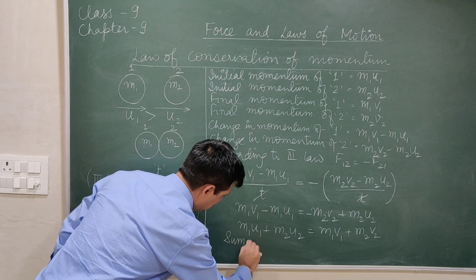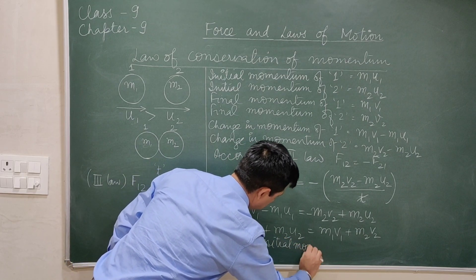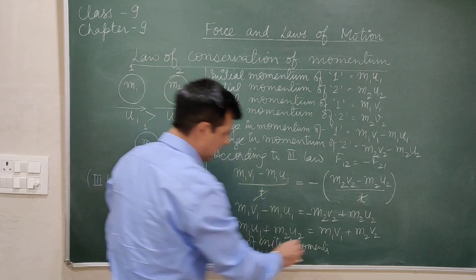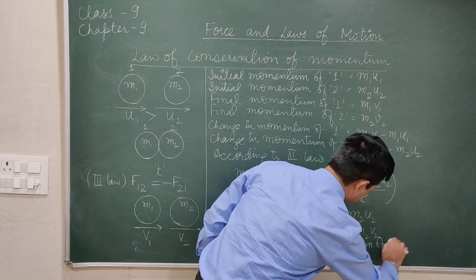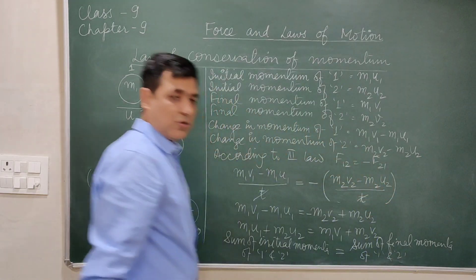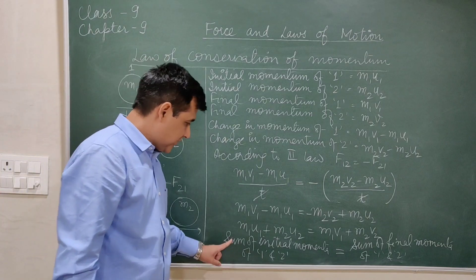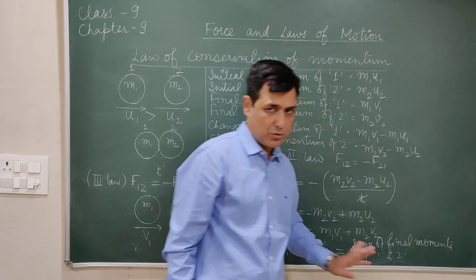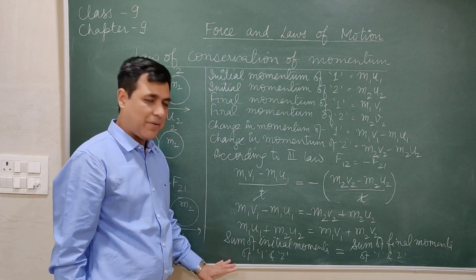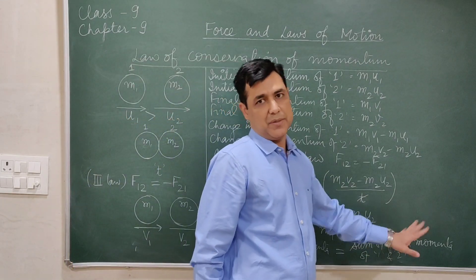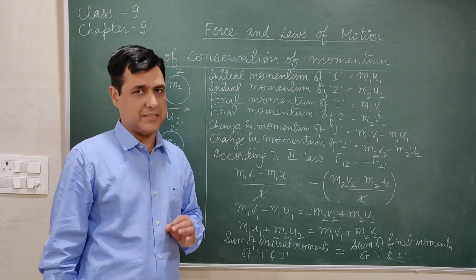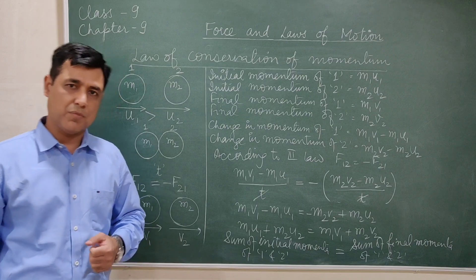This means the sum of the initial momentum of the first and second objects is equal to the sum of the final momentum of those two objects. The conclusion is: the sum of initial momentum of two objects equals the sum of their final momentum, provided there is no external force applied. In the absence of external force, for an isolated system, its momentum will remain conserved. This is the law of conservation of momentum.